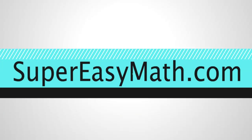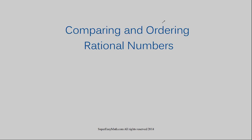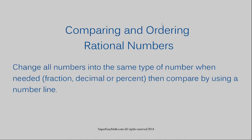Hey guys, it's Tiffany. Today I'm going to show you how to compare and order rational numbers. When comparing and ordering rational numbers, you want to change all your numbers into the same type of number when it's needed — meaning change all of your numbers into fractions, decimals, or percents. Then you compare using a number line. You only change the forms when it's needed; you don't always need to do this.